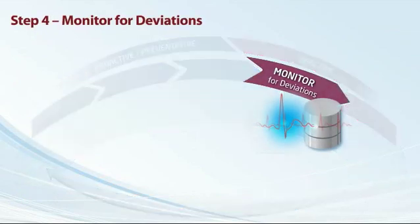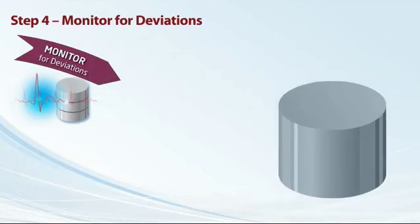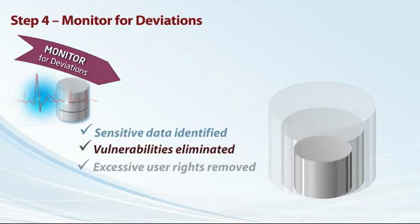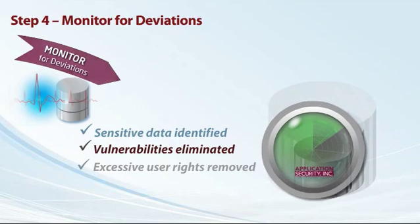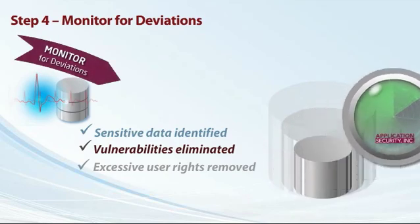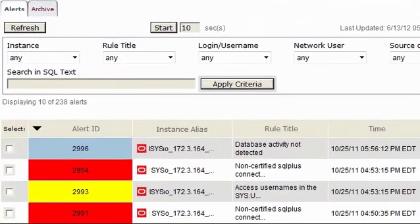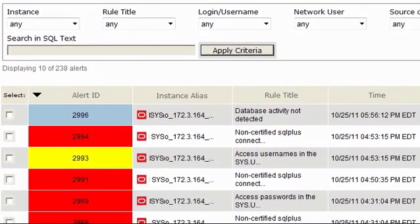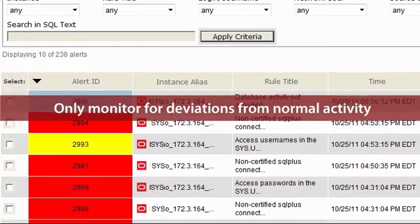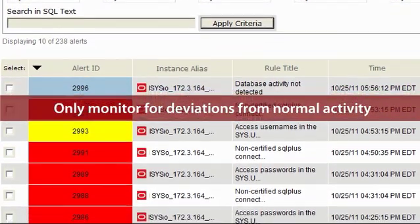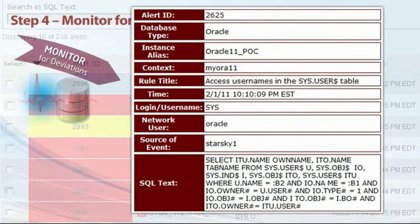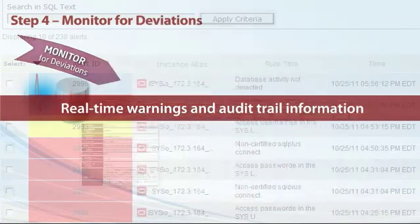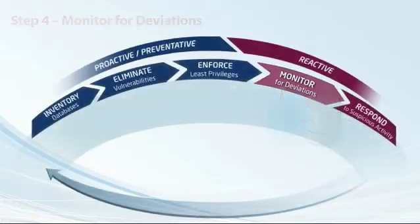Step 4: Monitor for Deviations. With sensitive data identified, vulnerabilities eliminated, and excessive user rights removed, enterprises are able to implement appropriate monitoring policies. Instead of monitoring everything, DB Protect's Precision Database Activity Monitoring allows organizations to monitor critical databases and alert on deviations from normal authorized activity. When suspicious behavior is detected, DB Protect generates real-time warnings and audit trail information to enable a fast and effective response.